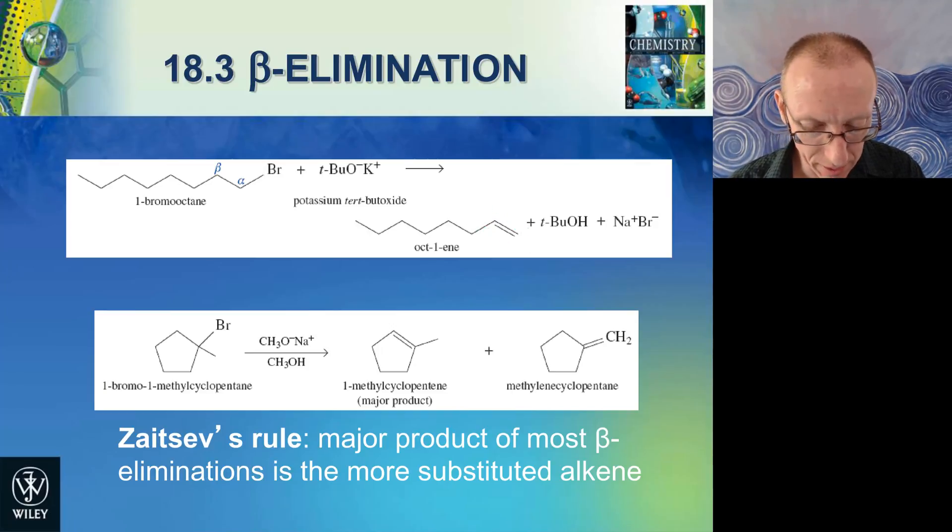If we did the reaction with a strong base and a tertiary alkyl bromide, we find that there's two possible products. There's either the double bond within the ring or the double bond external or exo to the ring. And it turns out that the major product is this one where the double bond is within the ring. And there's a general rule around this called Zaitsev's rule.